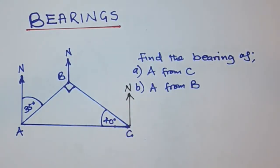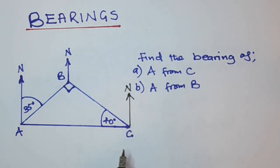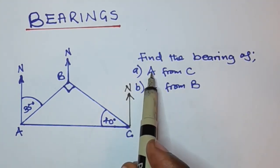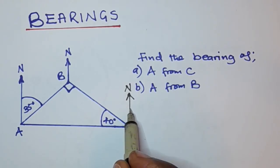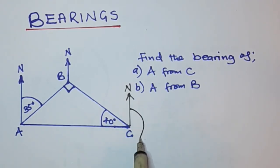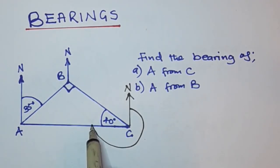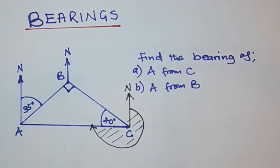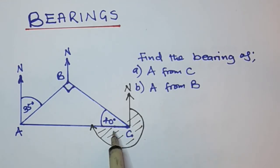Bearing is measured from the north clockwise until we meet the line AC. So we move from the north clockwise until we meet this line joining A and C. This angle is the bearing they want you to find. Now, how are we going to find this bearing?